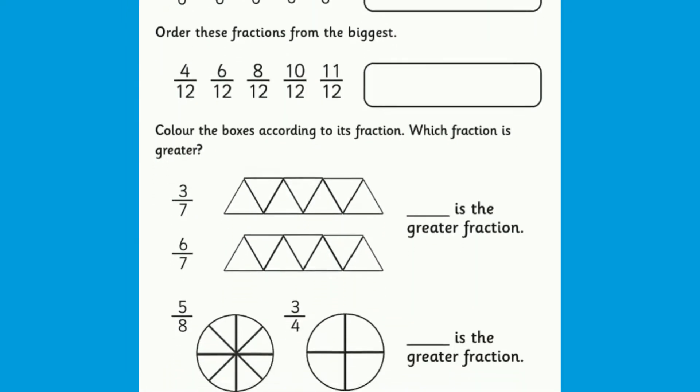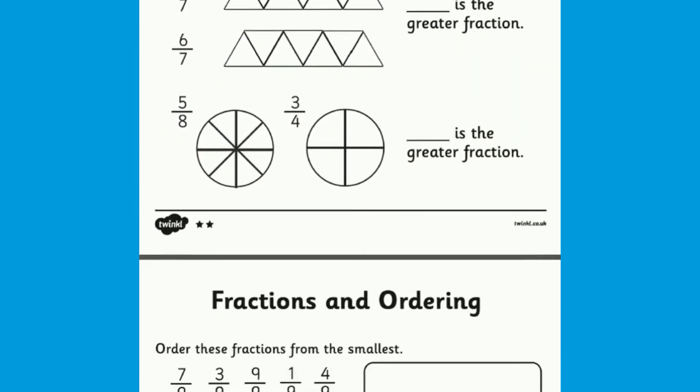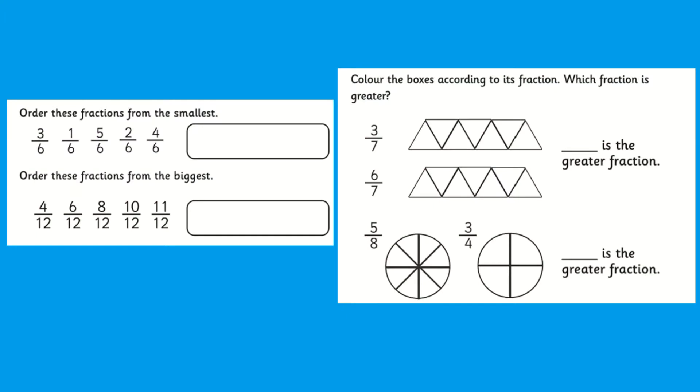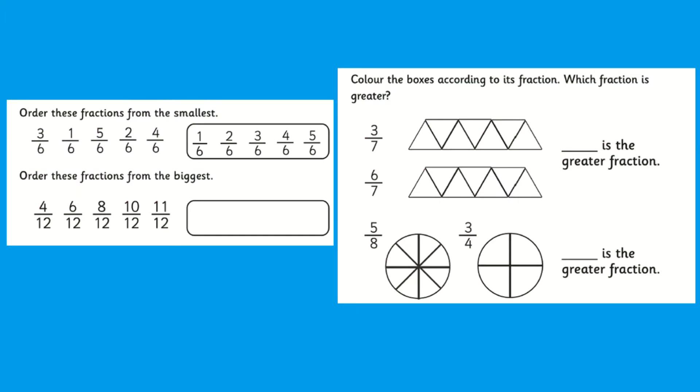This resource will help children to order fractions by learning visually. Children will begin the task by ordering the fractions from smallest and then the next set from the biggest. Pupils are then tasked to colour in the diagram according to its fraction and then note down which fraction is greater.